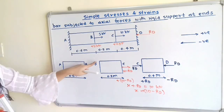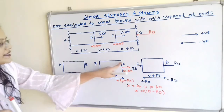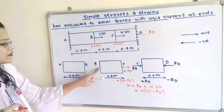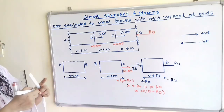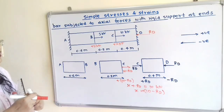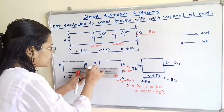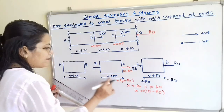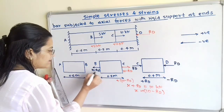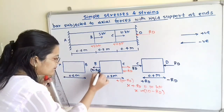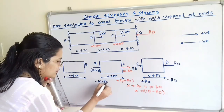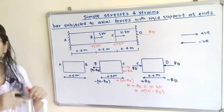Moving to the second face: the body is in equilibrium, so at point B we show the force with the same magnitude but opposite direction. The magnitude is 10 minus Rd, and since the direction is reversed we write it as minus (10 minus Rd).